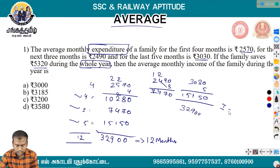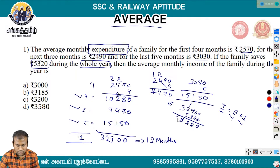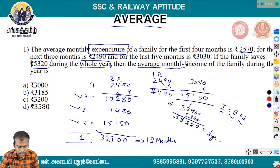Income equals expenditure plus savings. We know the monthly income is 5,320. The one year's income is known. So the average monthly income is 5,320. Then we calculate: income minus expenditure gives us the savings. The average monthly income of the family is derived accordingly.